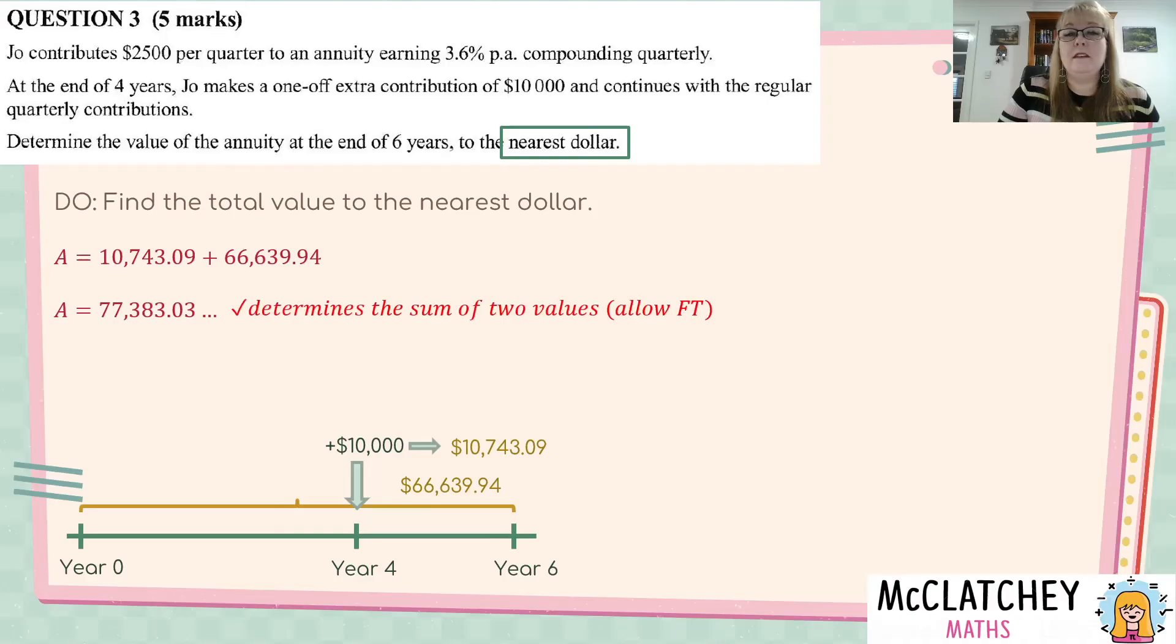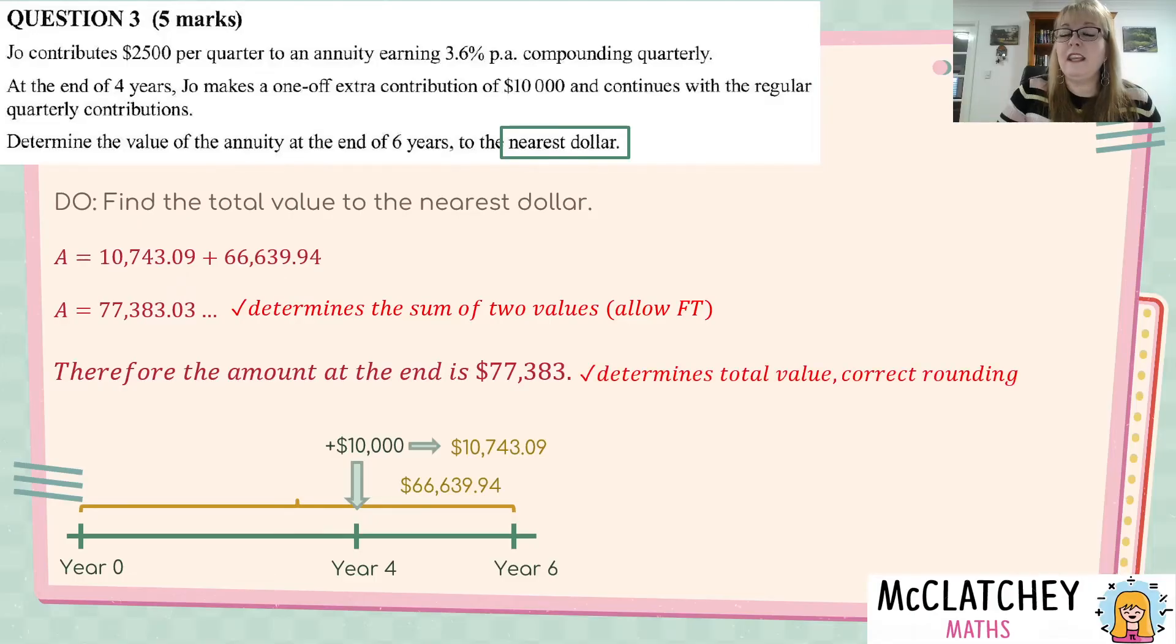We're going to find the total value now to the nearest dollar. So, we add the two together. And if you showed you're working that you were actually finding the sum of two numbers, you would be given a mark. And once again, if you got one of the numbers wrong, you could get still follow-through marks here because you've added the two numbers you found together. And to make a statement at the end where it's rounded to the nearest dollar. I guarantee you a lot of students in their panic reading the question actually didn't round and they gave it to two decimal places because that's kind of what we're used to. So, it's always a good idea to have a look and see what the question is actually asking of you. So, with that correct rounding at the end, that total value, that was worth your fifth mark.